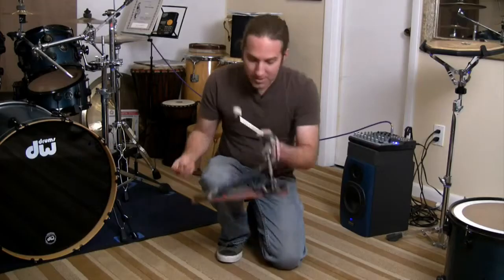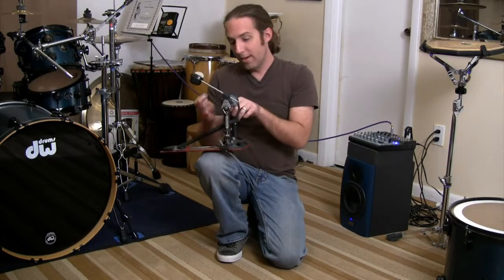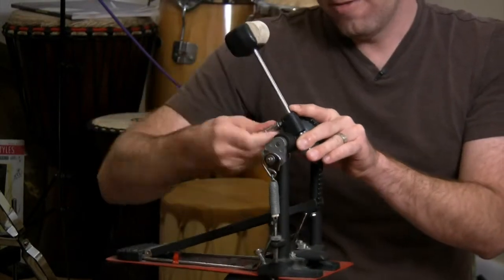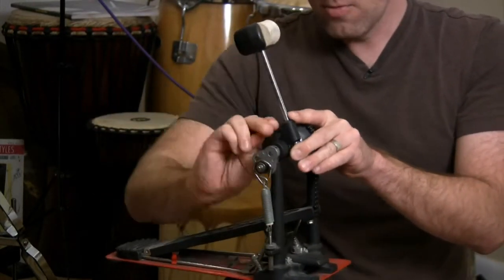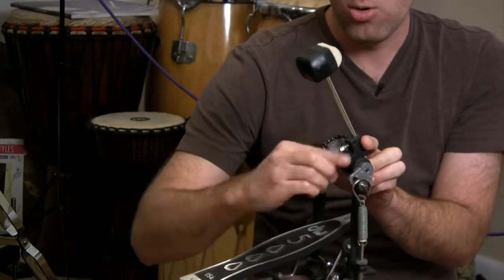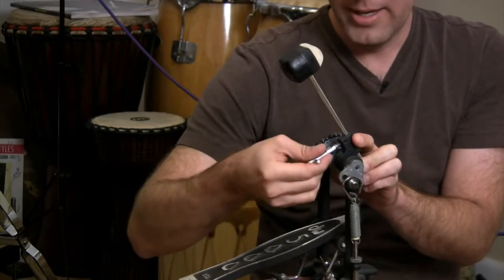And what that means, here's your bass drum pedal right here. We're going to take our drum key, and we are going to take off the old rod here. And basically what I'm doing is I'm just unscrewing the nut here that holds the beater in place.